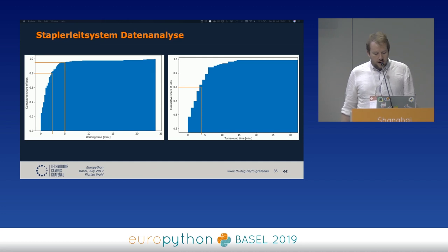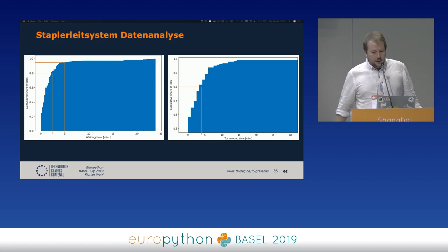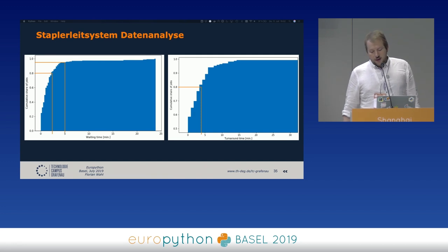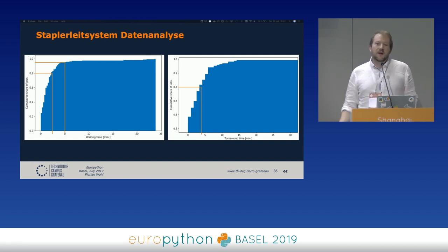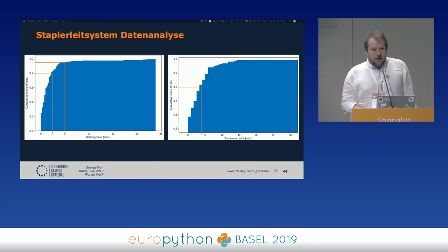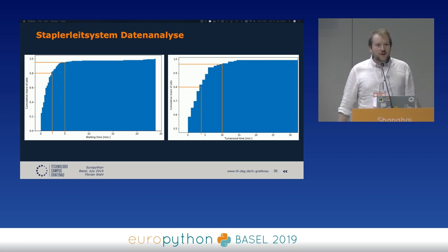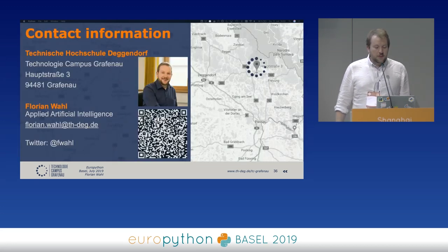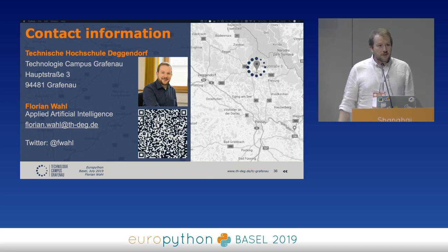We also measured the turnaround time — the complete cycle from picking up the full box to delivering the empty one back — and found it's below five minutes for 80% of packages. That's where the interesting data science work starts, but in the beginning there was no data to analyze, which is why we invested the time in building this system. It's also a lot of fun, and I hope this motivates you to start your own MicroPython project.